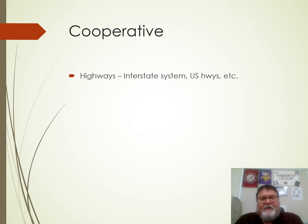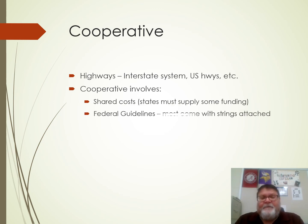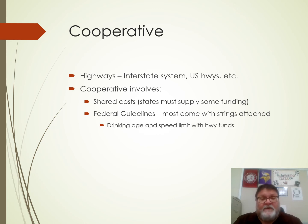Let's talk more about cooperative federalism with the highway system — the interstate system and U.S. highways. Both the state and the national government have to supply funds for this. Cooperative federalism involves shared cost: states have to supply funding but they have to follow federal guidelines to get it, so the money comes with strings attached. Cooperative federalism is much more about strings attached to federal money — if you want it, you've got to follow these rules. Things like drinking age and speed limit tied to highway funds — it's the same idea. States also share administration and have some latitude in the way they spend it, but they really have to follow the guidelines.